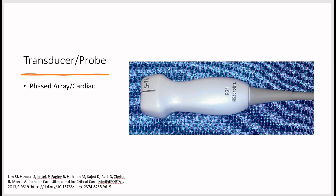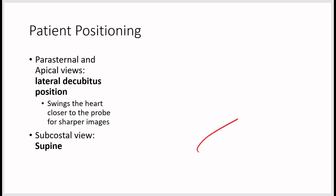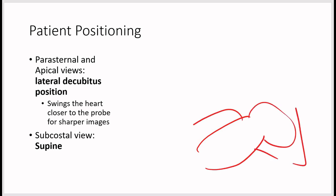The probe used is the phased array cardiac probe. We have the patient in the lateral decubitus position, which is best for parasternal and apical views, as this swings the heart closer to the probe for sharper images. For a subcostal view, the patient is in the supine position.